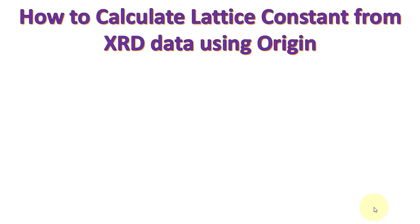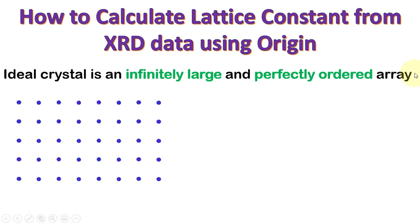In this video, we will discuss how to calculate lattice constant from XRD data using Origin. An ideal crystal is an infinitely large and perfectly ordered array. By infinite here, we mean few microns, because we consider the X-ray wavelength which is of the order of angstrom, so few microns will be infinite length for X-rays. The atoms are arranged in a perfect manner.